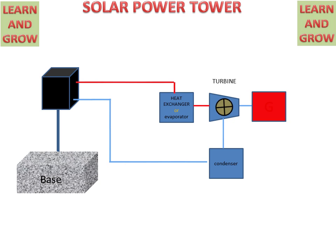The generator will create electricity. Then, after working, the steam will go to the condenser where it is cooled to the desired level.